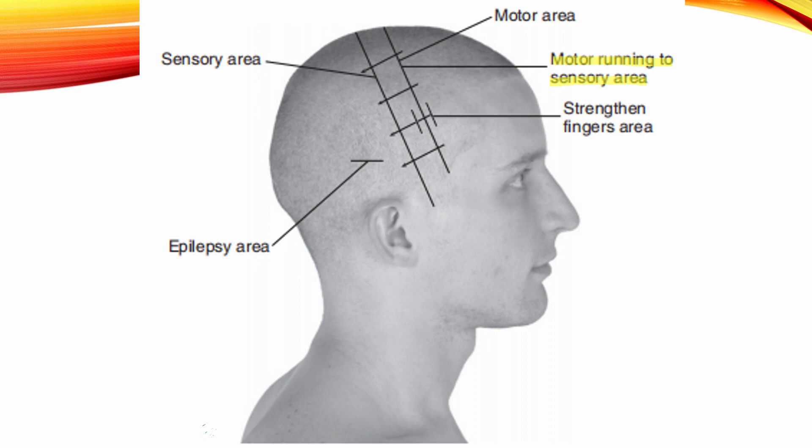Motor Running to Sensory Area. Location: Starting from the motor area, insert at a 90 degree angle running toward the sensory area using the Chiao Scalp Acupuncture System. Use transverse insertion from the upper to lower area with five equally spaced needles. Indication: Paralysis.